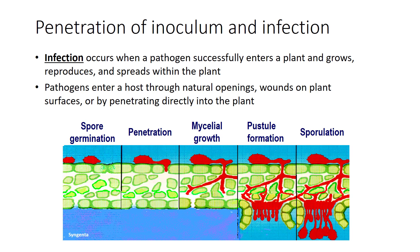Infection occurs when a pathogen successfully enters a plant and grows, reproduces, and spreads within the plant. Pathogens enter a host through natural openings, wounds on plant surfaces, or by penetrating directly into the plant. Insect vectors may acquire pathogens from diseased plant tissue as they feed and then introduce the pathogen into healthy plant tissue. Some pathogens attack and multiply only in leaf tissue. Others attack and multiply in stems, roots, fruits, or the conducting tissue of the plant. Another type may attack virtually the entire plant, while some attack only seedlings or mature plants, and some have no preference. The period between infection and first symptoms is the incubation period. The length of the incubation period may range from days to weeks or even months, depending on the pathogen and host plant involved.